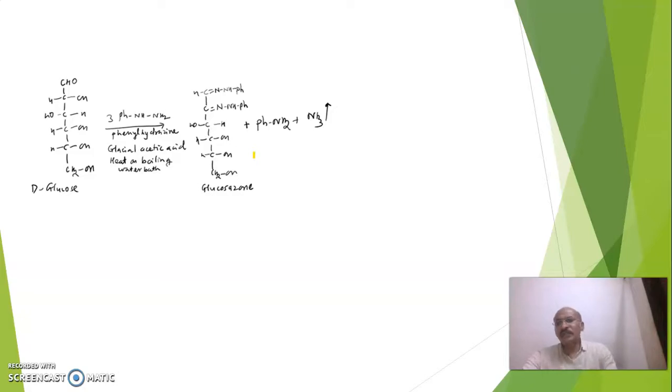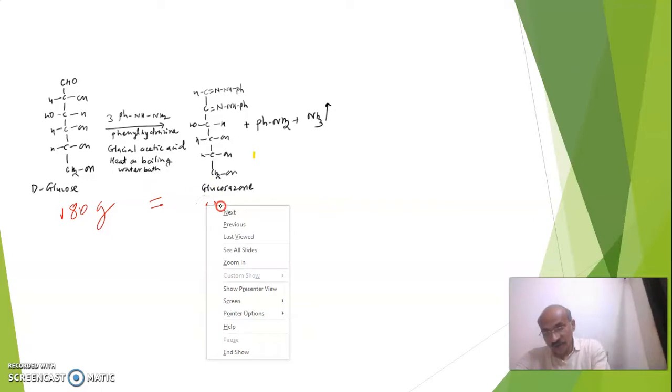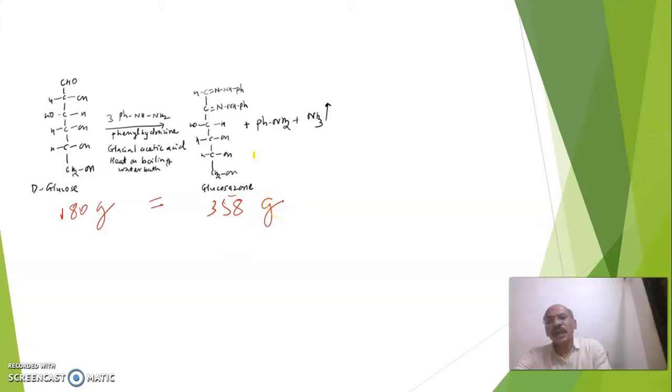So what is calculation part? Now here this is reaction given. D-glucose, their molecular weight we have to consider. For the calculation it is 180 gram. We have to convert into gram, and here molecular weight of product is 358 gram. According to law of conservation of mass, 180 gram corresponds to 358 gram.